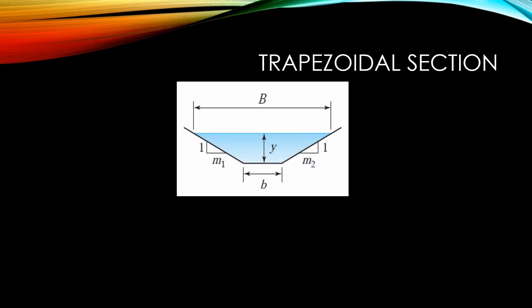A trapezoidal section is a little bit more complicated to calculate. Typically, trapezoidal sections will give you the base width, also known as the bottom width, the depth, which is represented with the variable Y, and two side slopes, which are, in this image, M1 and M2. The area of the trapezoid is typically found by taking the average of the bottom width and the top width of the channel and multiplying it by the depth.